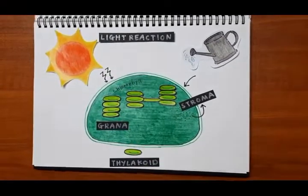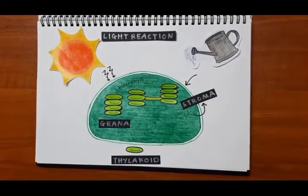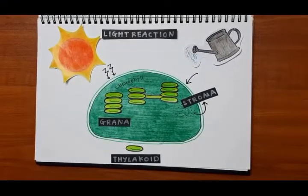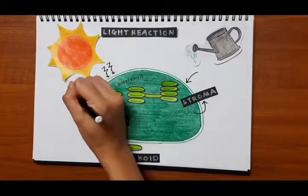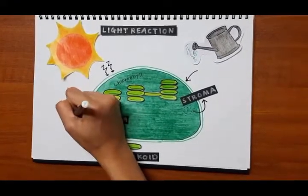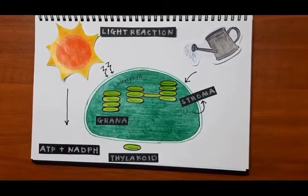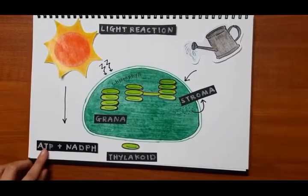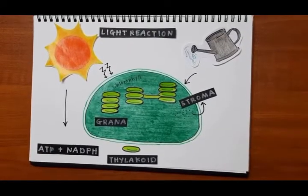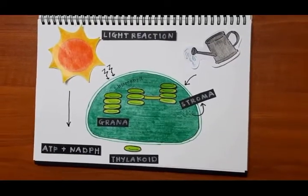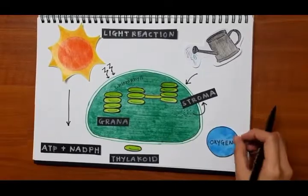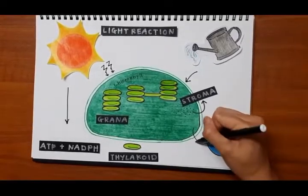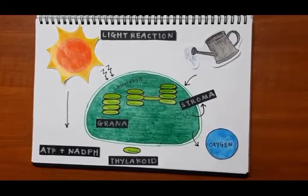It converts light energy to chemical energy and produces ATP and NADPH, and releases oxygen as a waste product.